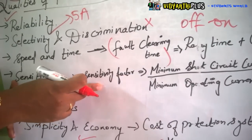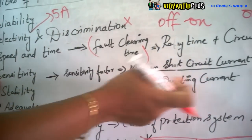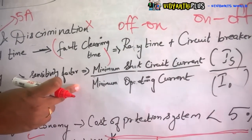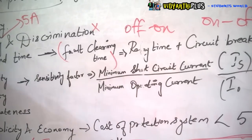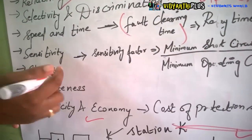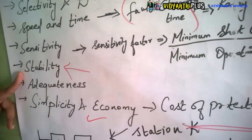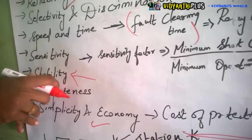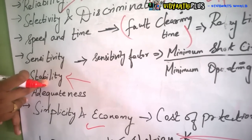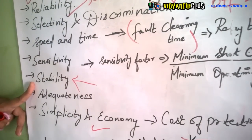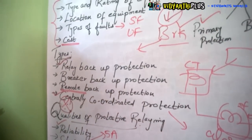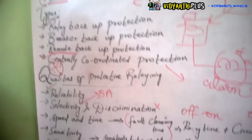Next is sensitivity. The sensitivity factor is given by the ratio of short circuit current to the open circuit current. The sensitivity factor should be very high — immediately as the circuit senses the fault, the relay should operate. Next is stability — the system should be highly stable in nature. If any fault occurs, stability immediately goes down, and it should be maintained, depending on the rating of the equipment, location of the equipment, and type of faults.